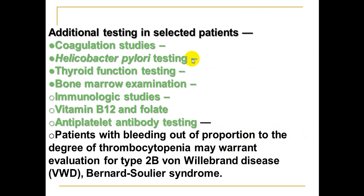Additional tests include H. pylori testing (associated with ITP), viral function tests for autoimmune disease, bone marrow examination for elderly patients to exclude myelodysplastic syndrome or infiltrative bone disease, and serological studies mainly for connective tissue diseases, especially systemic lupus erythematosus, and B12 deficiency. Anti-platelet antibody testing is not routinely done. Patients with bleeding out of proportion to the degree of thrombocytopenia should be evaluated for type 2b von Willebrand disease or Bernard-Soulier syndrome.